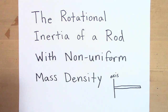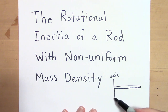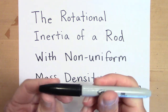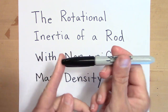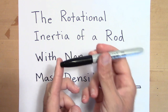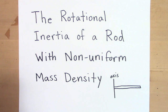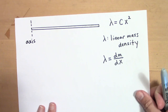Welcome. Today we're going to be talking about the rotational inertia of a long thin rod, but this time it's not going to have a uniform mass density — it's going to have non-uniform mass density. We're going to have the axis at the end, so it's going to be twirling around like a pen spinning around one end. We still need to know what the mass density is, but it doesn't have to be uniform here.